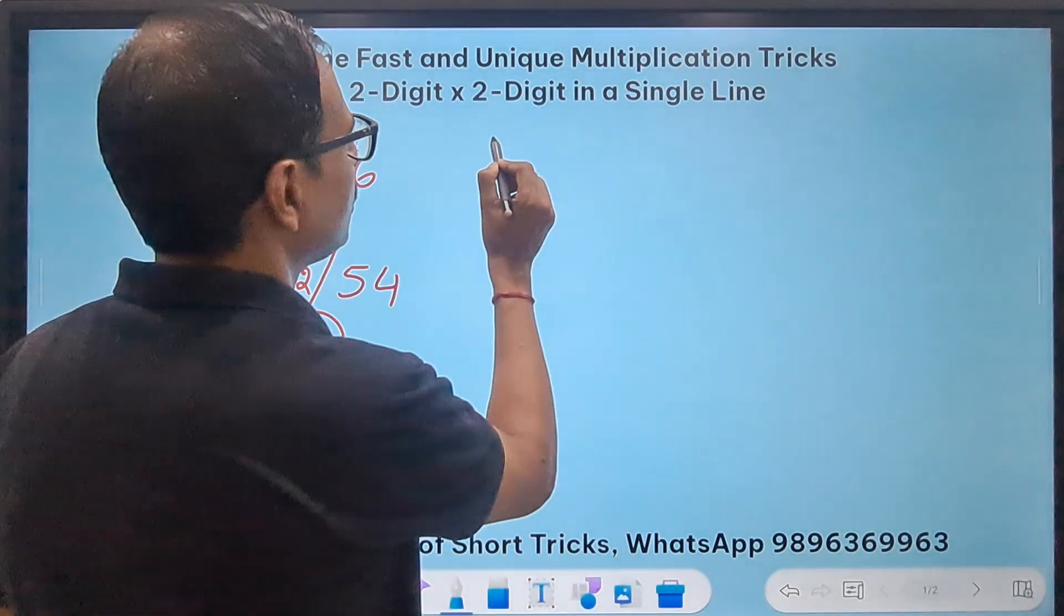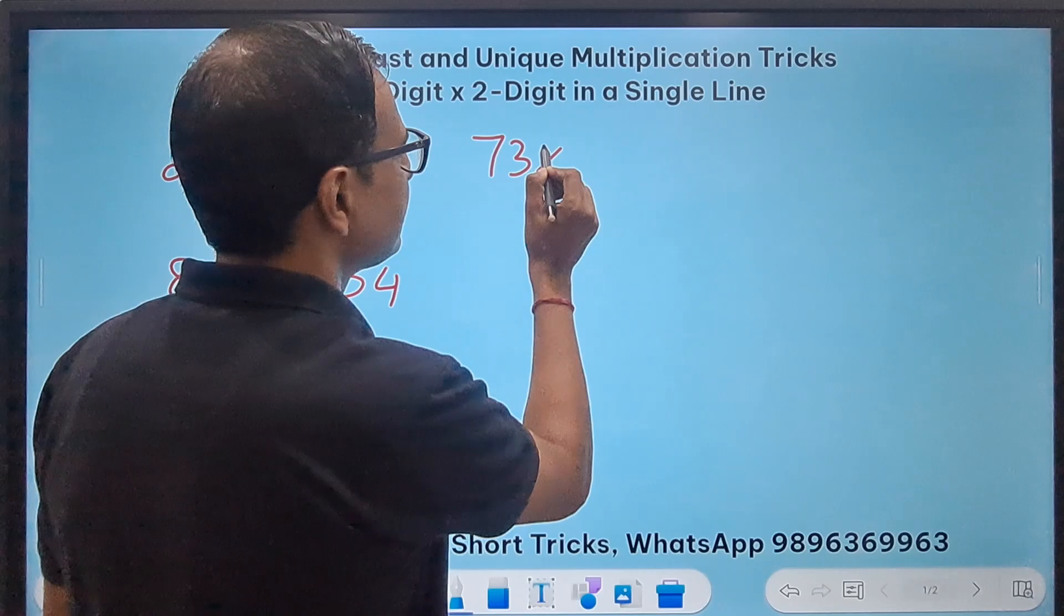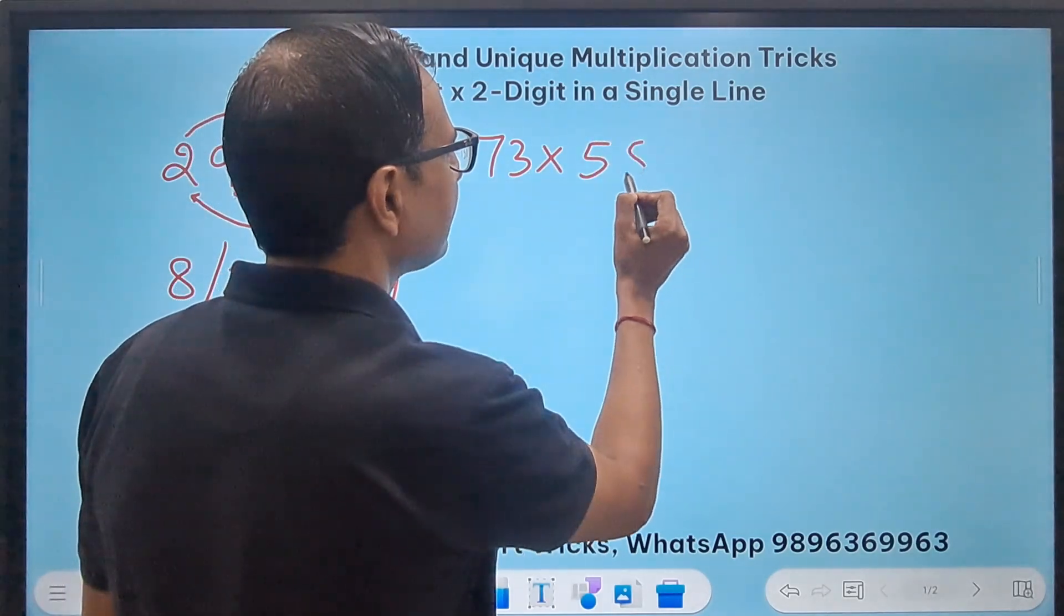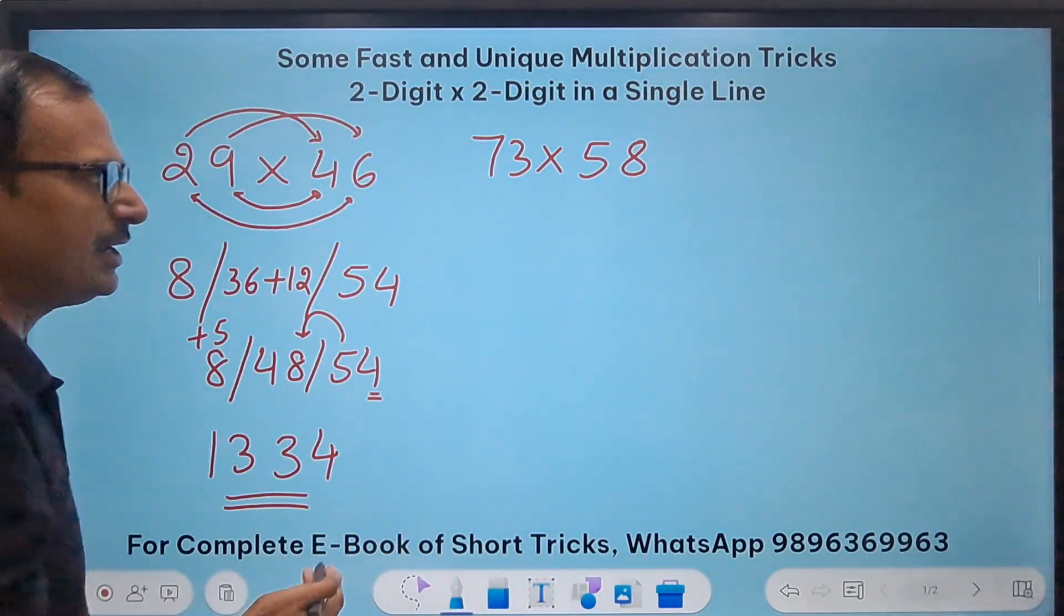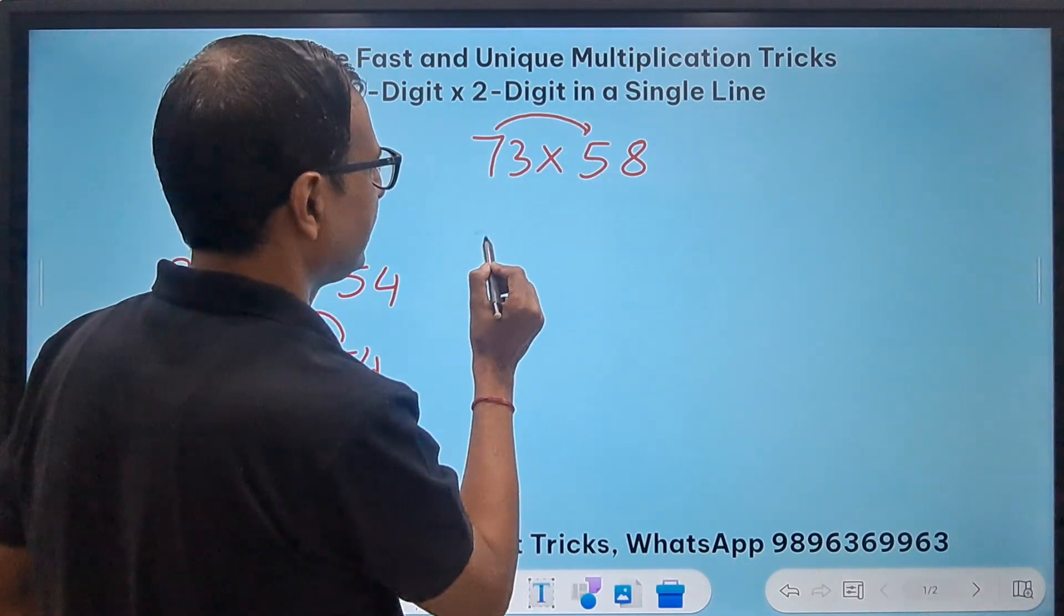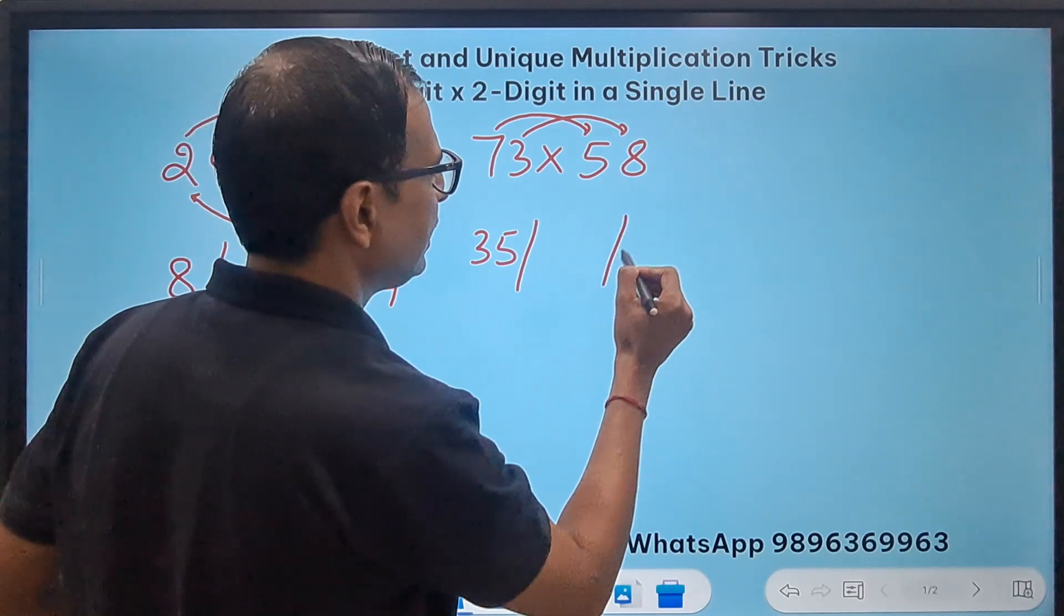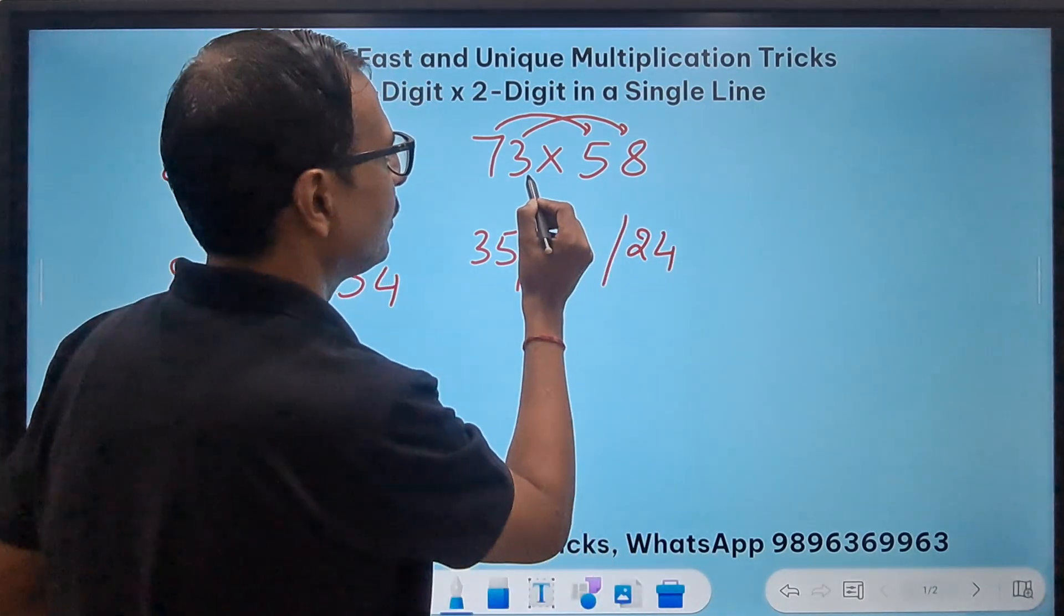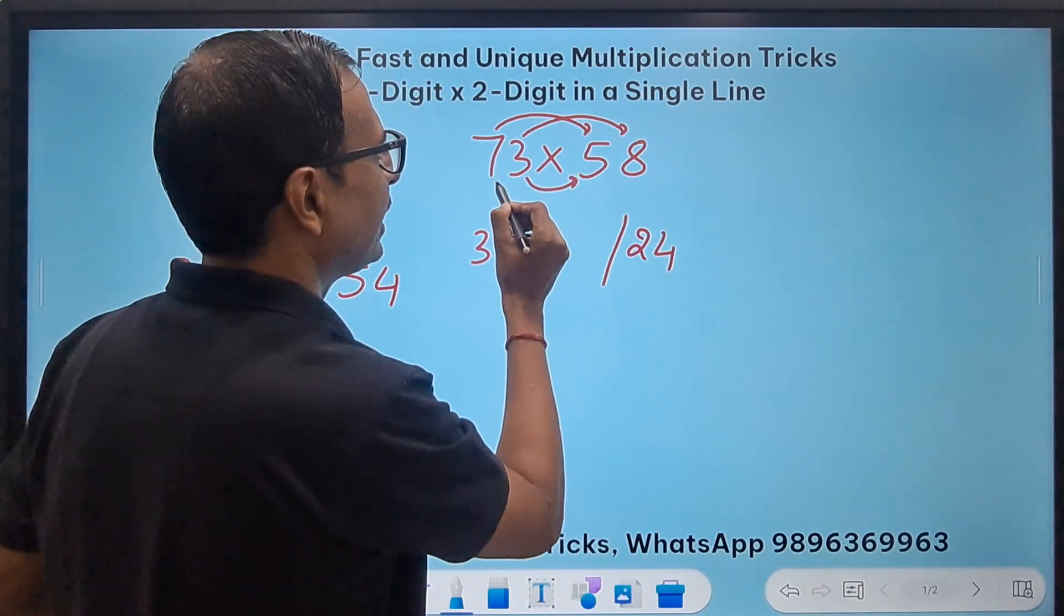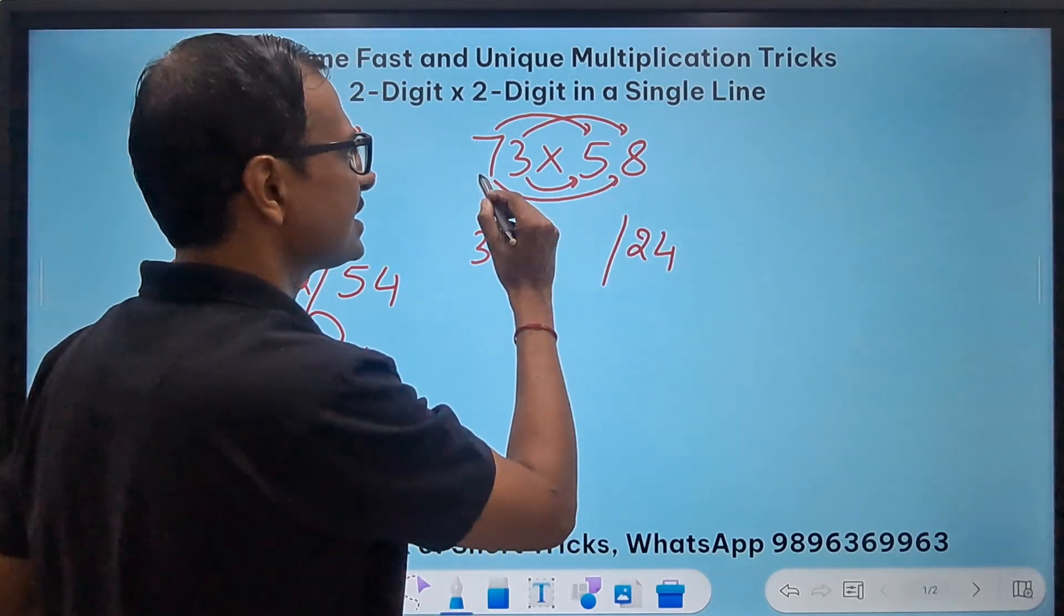Likewise suppose you have to do say 73 times 58. Now let's eliminate some of the steps I have written here. So 7 times 5 is 35 then 3 times 8 is 24 and the middle ones this is 15 and this is 56, 56 and 15.